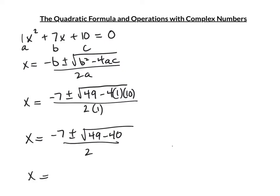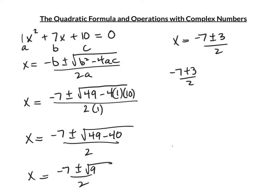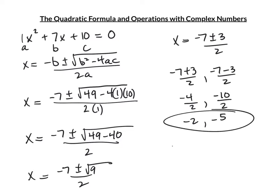That's x = (-7 ± 3) / 2. Splitting: (-7 + 3)/2 = -4/2 = -2, and (-7 - 3)/2 = -10/2 = -5. So the answers are -2 and -5.